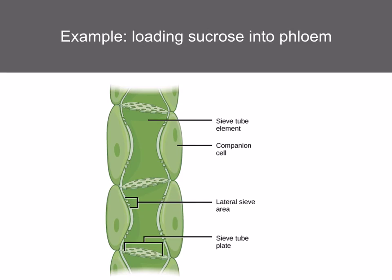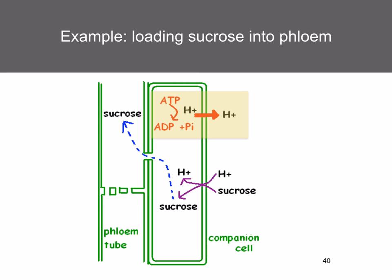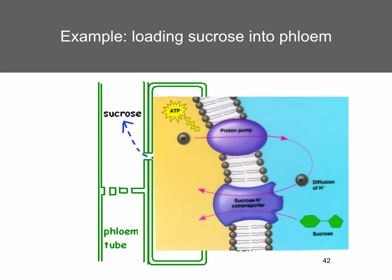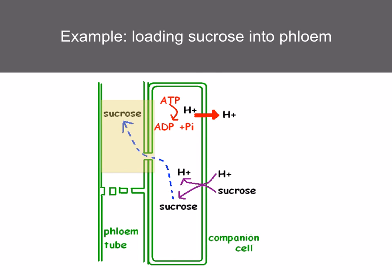Loading sucrose into phloem. In the vascular bundle, phloem transports sucrose. Sucrose needs to enter the phloem sieve tube elements, and it does this by active transport. Protons are pumped out of the companion cell using ATP. The protons then diffuse down their concentration gradient back into the companion cell through a co-transporter molecule, and as they do this, they pull sucrose with it — co-transporting sucrose. You can see the proton pump and the co-transporter protein on the membrane. Sucrose can then diffuse into the phloem tube through the plasmodesmata.